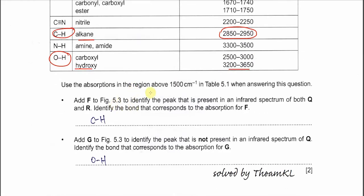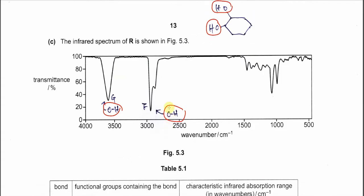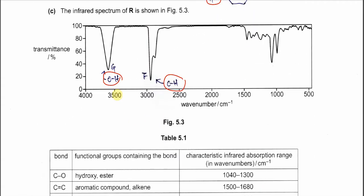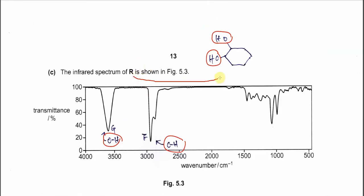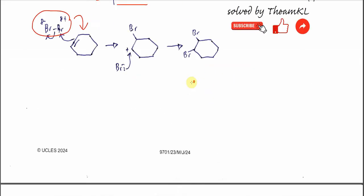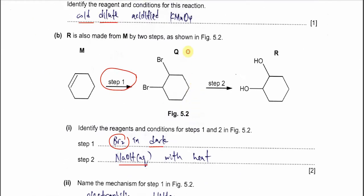Use the absorption in the reagent above 1500 wave number in the table 5.1. Answer this question. Okay add the F F to the figure 5.3 to identify the peak that is present in infrared spectrum of both Q and R. Both Q and R. So for the Q and R. R is this diol. Q is this one.